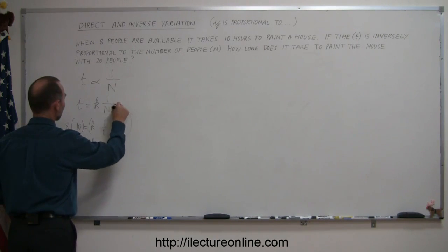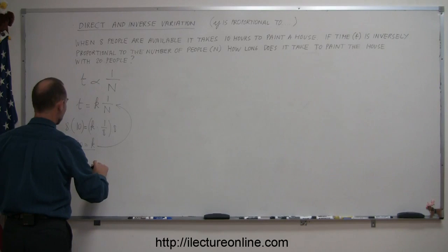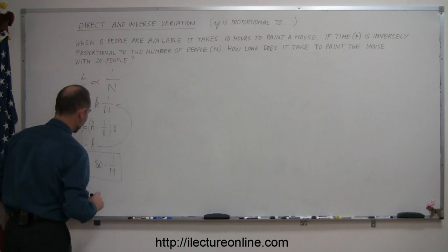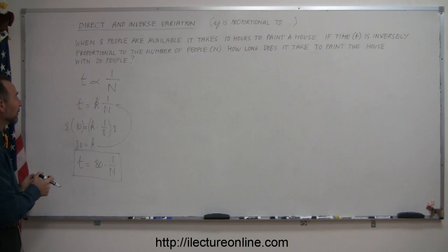We plug that back into our equation so we can write that t equals 80 times 1 over n. There's our equation. That allows us to find the time that it takes to paint the house with any number of people.